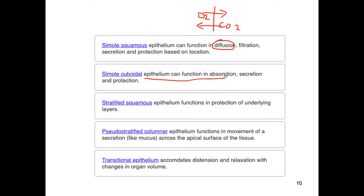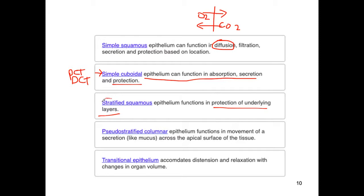Epithelium functioning in absorption, secretion, and protection — think of the kidneys, which absorb, secrete, and protect. At the proximal and distal convoluted tubules we have simple cuboidal epithelium. For protection of underlying layers, stratified squamous is needed — think of the epidermis of the skin with its many layers to protect the underlying tissue.